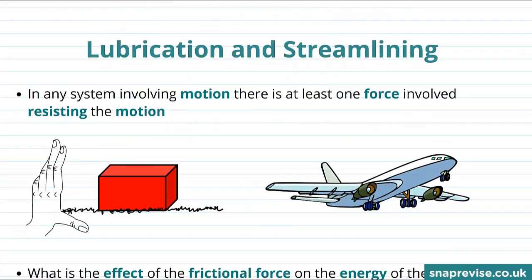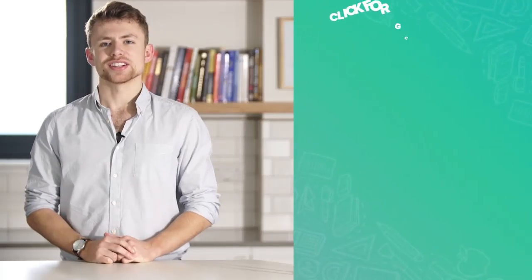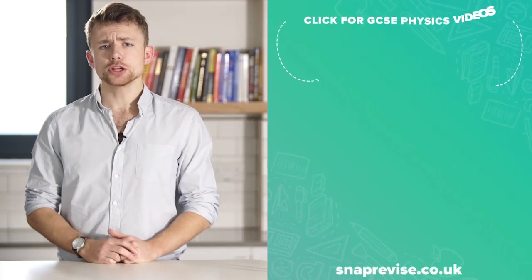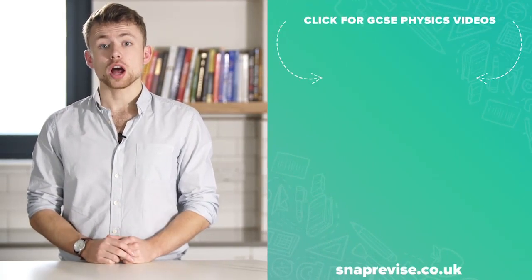Let's talk about lubrication and streamlining as methods to reduce the amount of energy going into the wasted output energy store. In any system involving motion there's at least one force involved in resisting that motion. For example, consider a box moving to the right with some velocity.